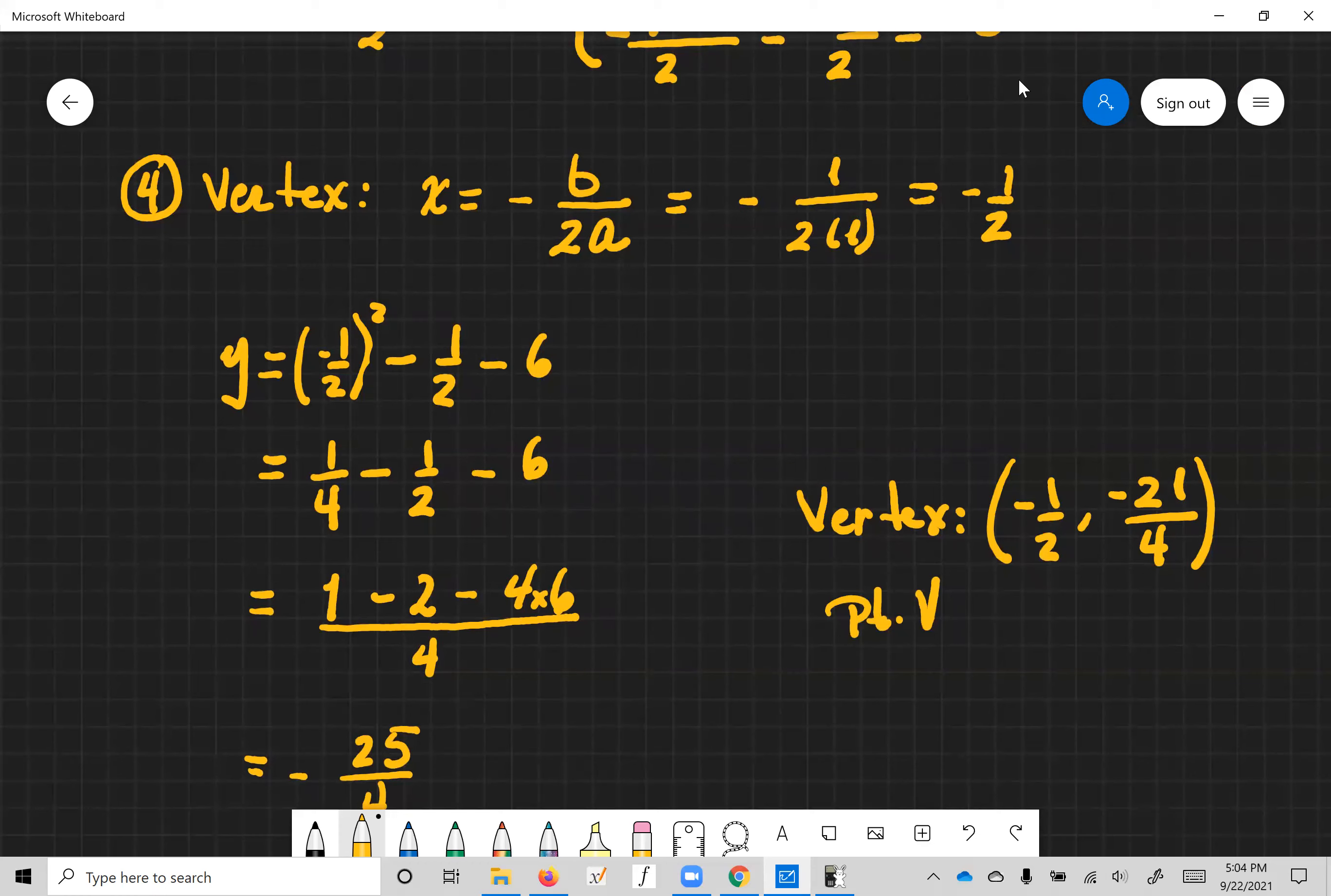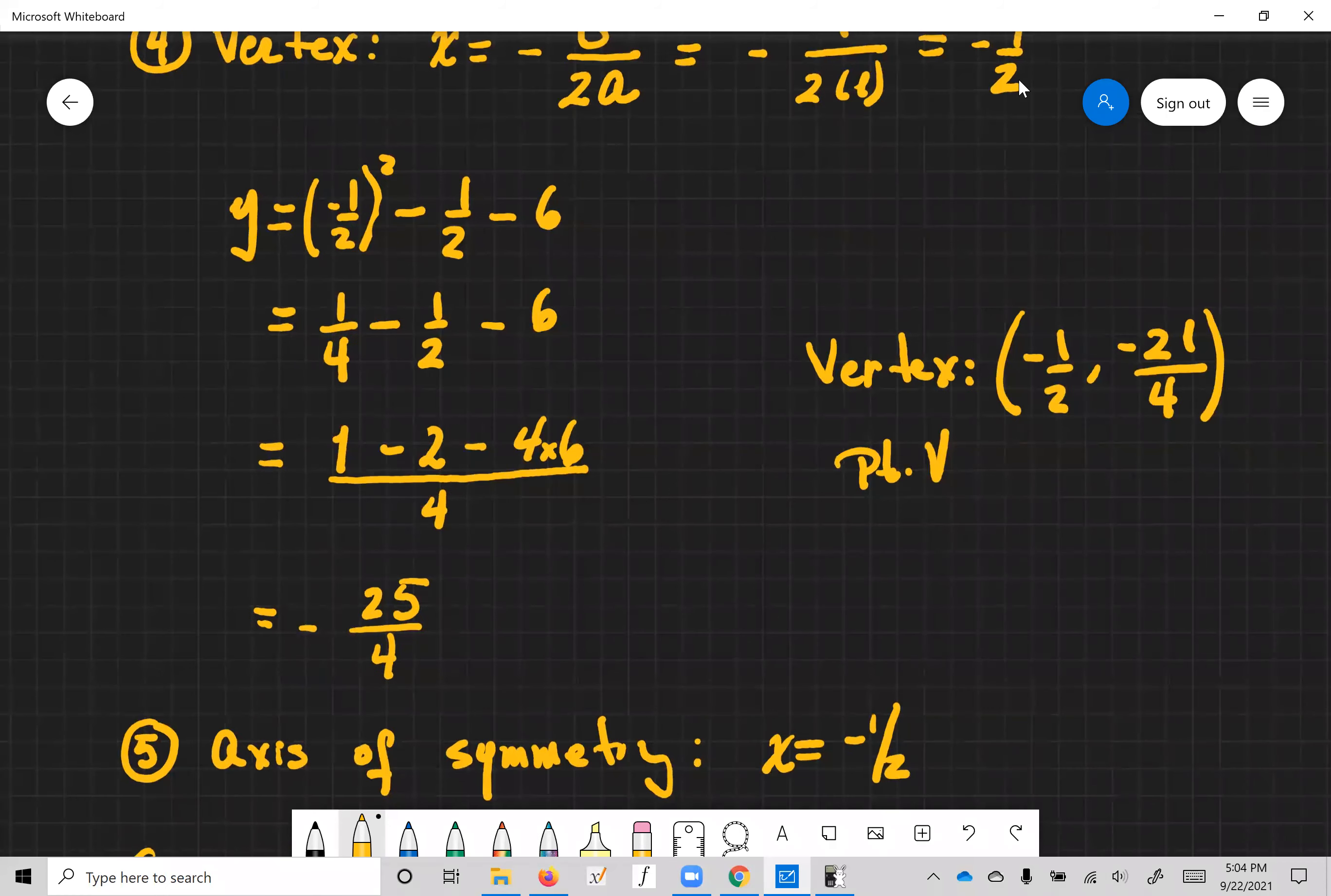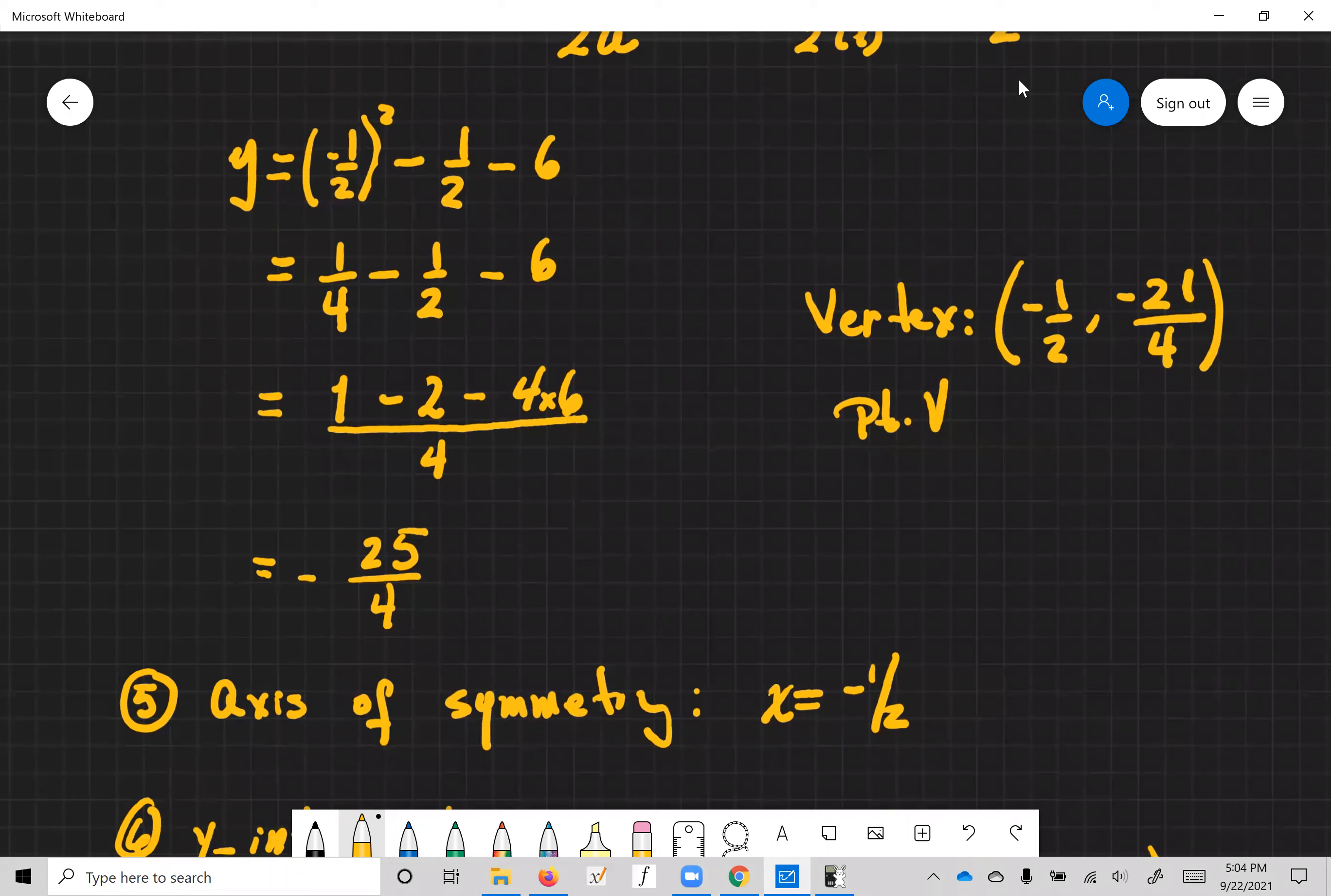The common denominator is four. So I get one minus two here because I have a two here, and then minus six times four. I get negative 25 over four. It's like negative six point two five.